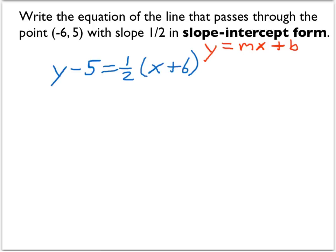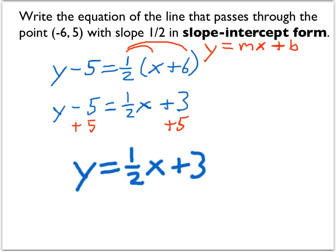In order to get mx plus b, we'll have to distribute the 1/2, and in order to get y alone, we'll have to add 5. So let's start by using the distributive property. We have 1/2 times x and 1/2 times 6. And then let's add 5 to both sides of the equation.